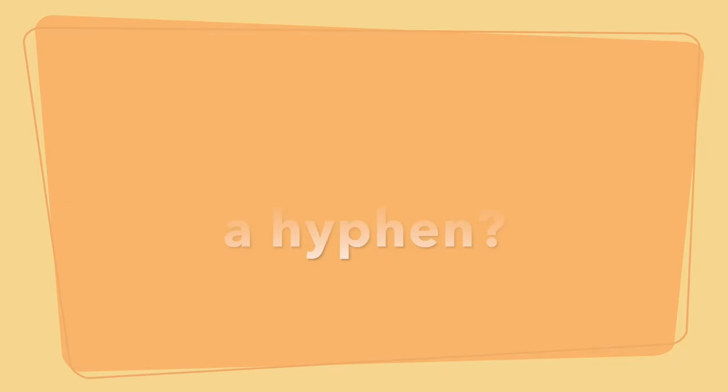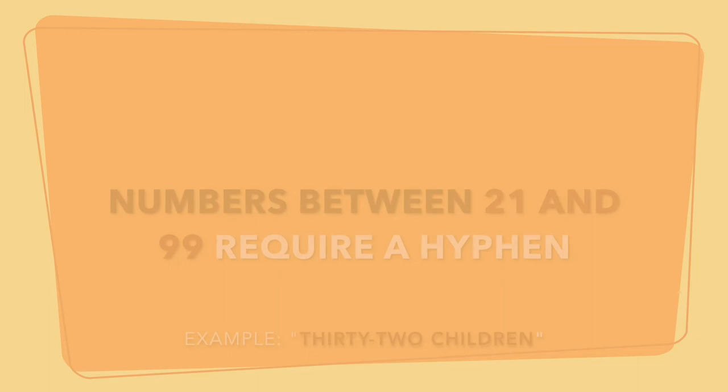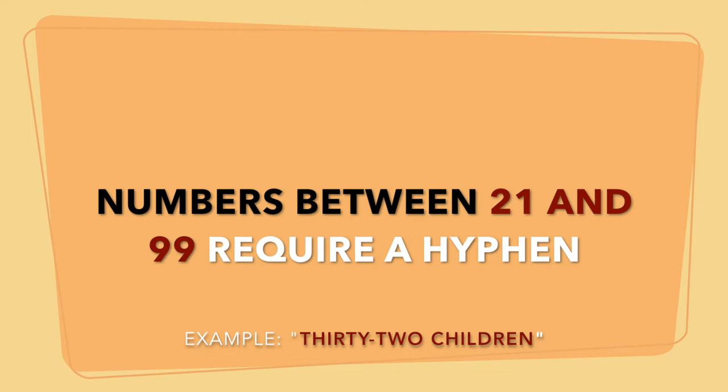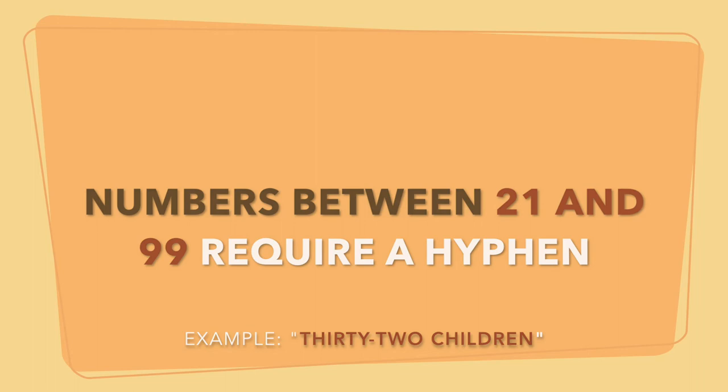We also hyphenate compound numbers. Any number between 21 and 99 gets a hyphen when written out. For example, 'thirty-two children' — thirty-two needs a hyphen. Another example: one thousand, two hundred and twenty-one dollars — the 'twenty-one' portion gets a hyphen.